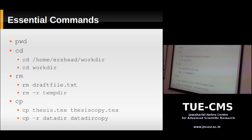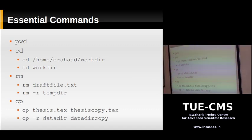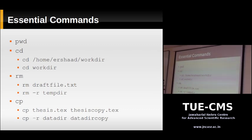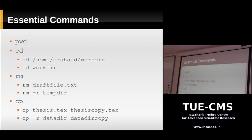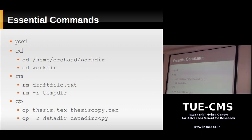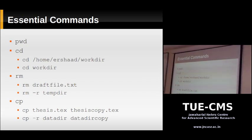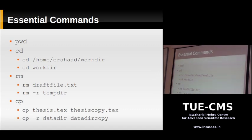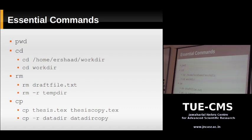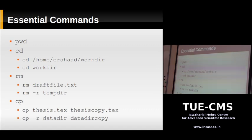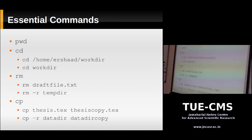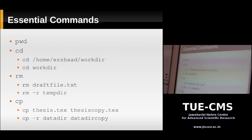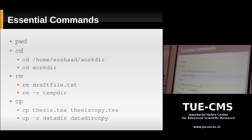The power of the Unix command line comes from having many small programs that each do something very specific. For example, the 'cp' command only copies files — it doesn't do anything else. This is sometimes called the toolkit philosophy: Unix is a toolkit with a bunch of small tools, and you use these tools together to do useful things. In the shell scripting part we'll teach you how to join these tools together for really powerful operations.